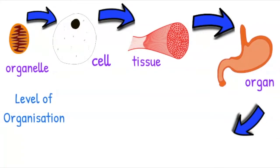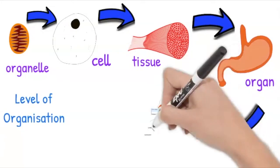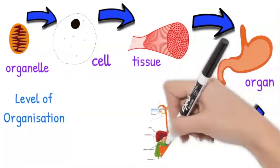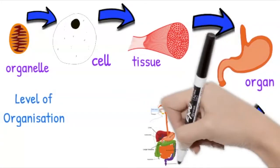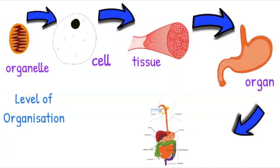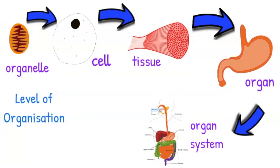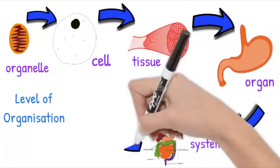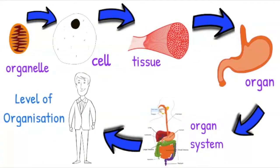Various organs then come together to form an organ system, which carries out a large role in the body. For example, the digestive system, which digests and absorbs food so that nutrients can be used by the body. These then build up into the overall organism.